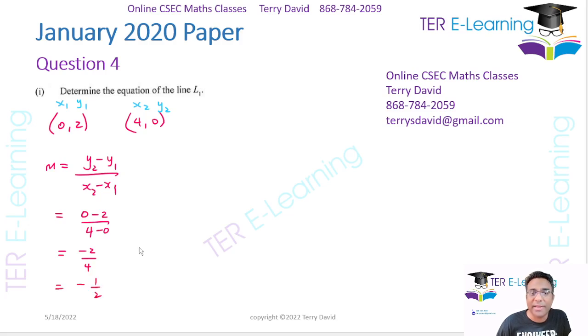So that's my gradient of my line L1. And you already know the y-intercept. The y-intercept was this figure here. So the equation of L1 is y is equal to minus a half x plus 2. Just remember that all equations of lines follow this format, y is equal to mx plus c. So that's the equation of L1.